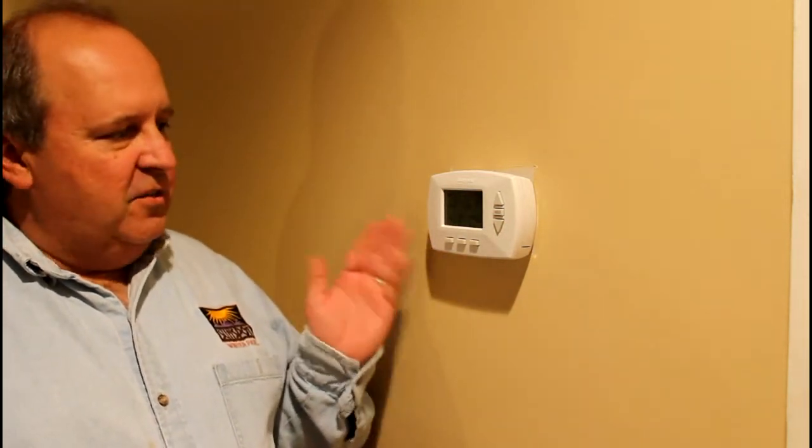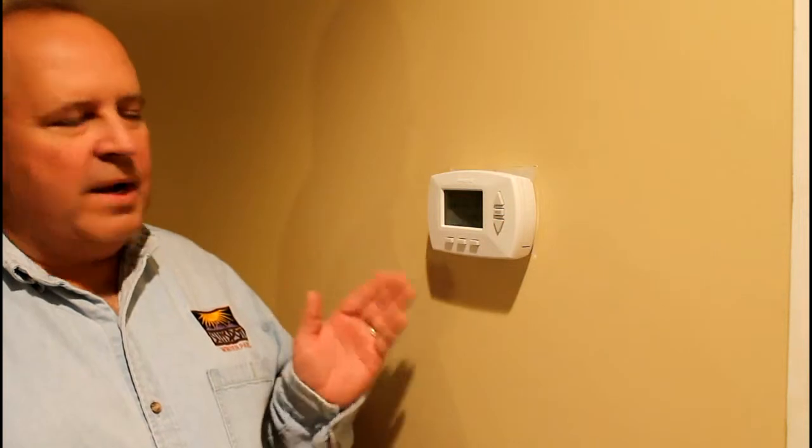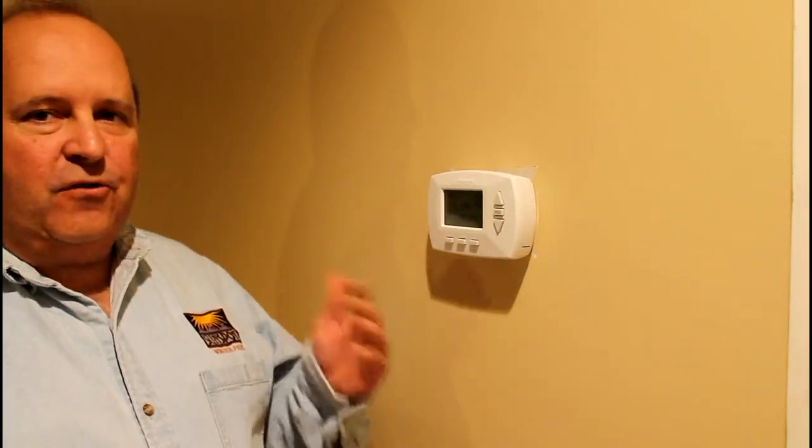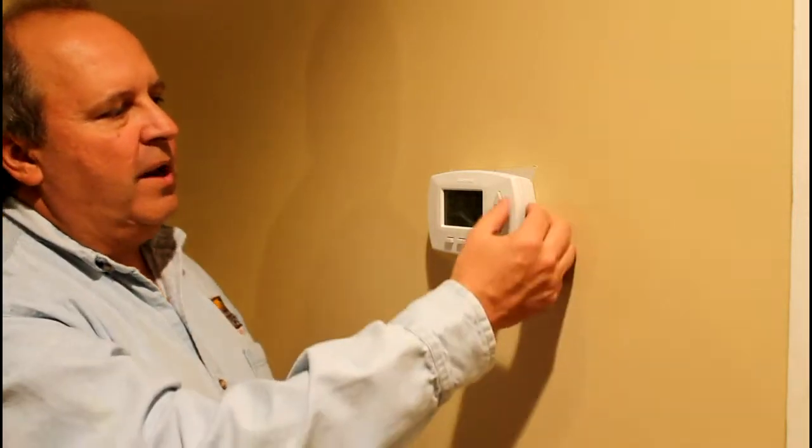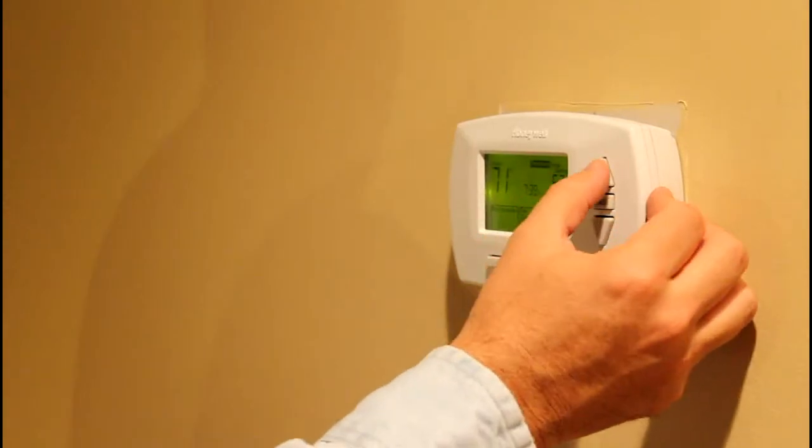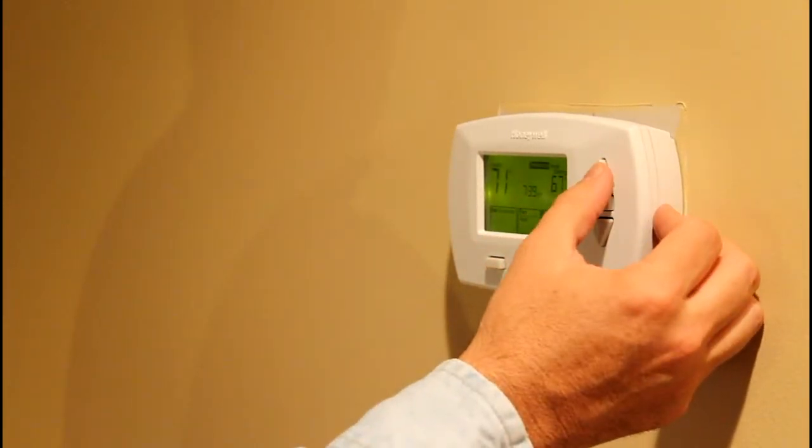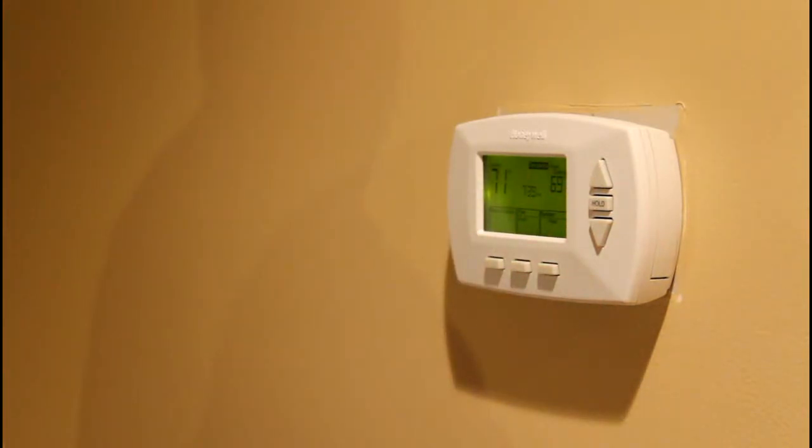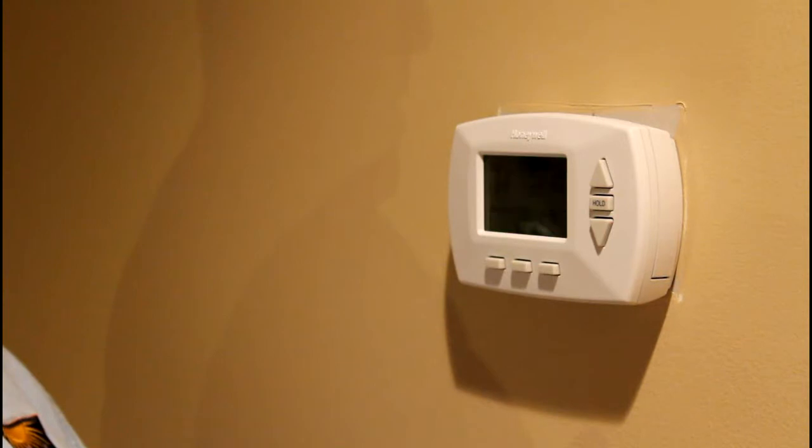So we're all set, done, programmed and running. Now, let me show you a few other things here real quick. Let's say you have somebody over the house and they like the temperature warmer. What I can do is hit one of these buttons here on the up arrow and you see it goes up. It's going up to 67, 68, 69 and it says temporary on there. So that's saying it's going to hold it at that temperature for a period of time and then it's going to drop it back down.